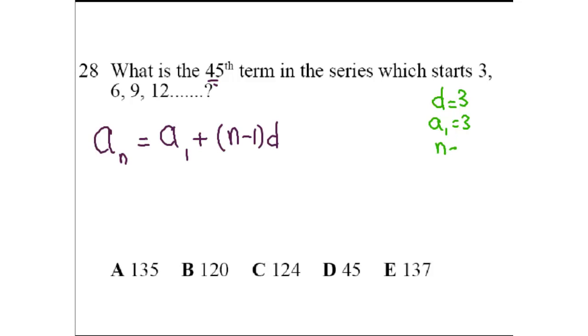n is 45 because we're looking for the 45th term. So a_45, the 45th term that we're looking for, equals a_1, which is 3, plus n minus 1, 45th term minus 1, so 44,